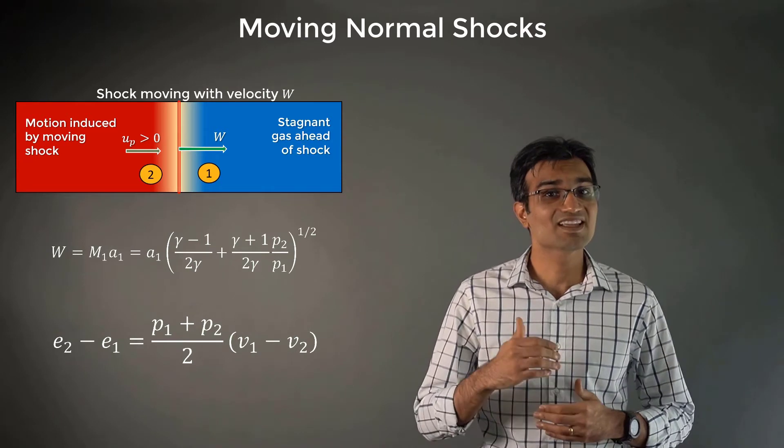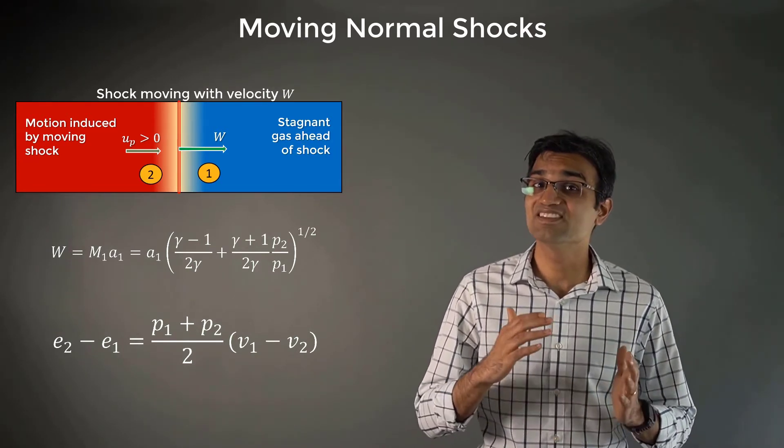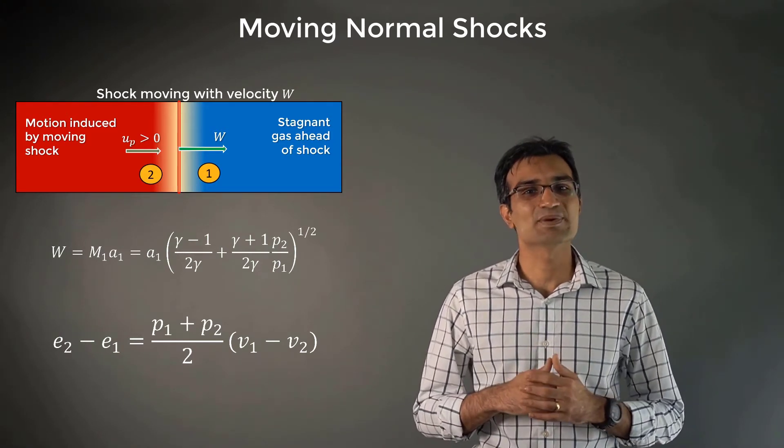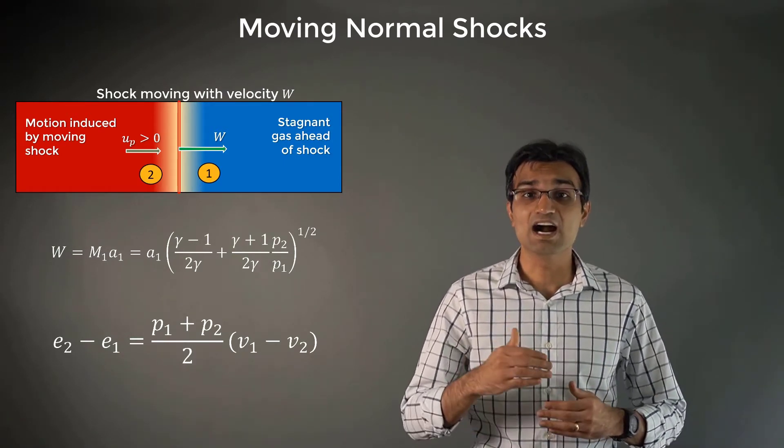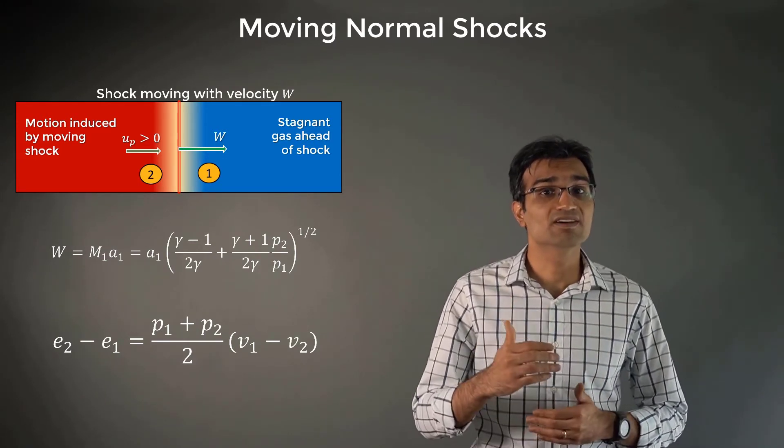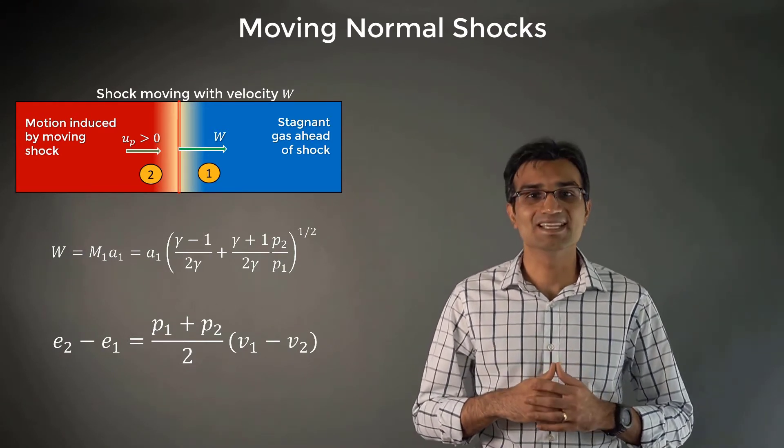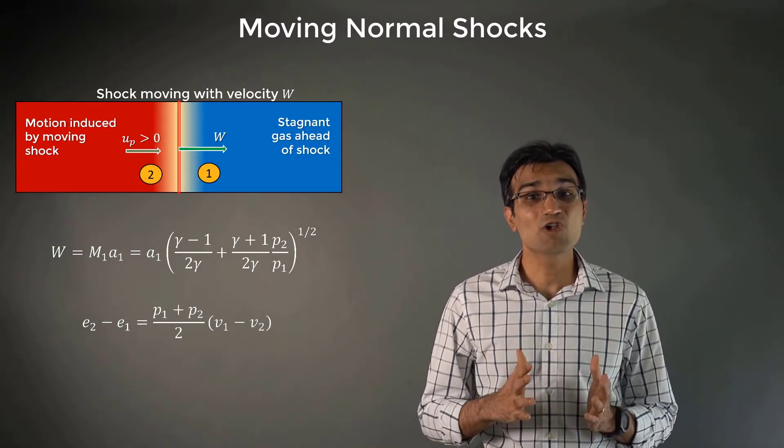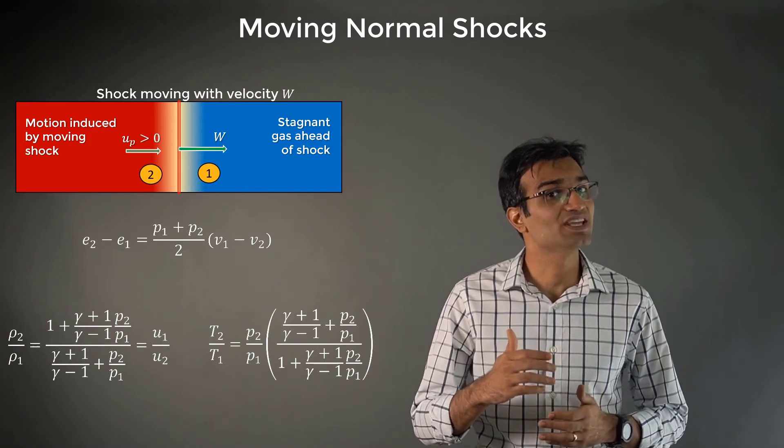By the way, did you notice that the Huguenoy equation is identical in form to the stationary shock? If you think about it, this is expected as it relates the thermodynamic variables across a normal shock, and they are independent of whether the shock is moving or stationary. Using the Huguenoy equations, we can also obtain the relations for density and temperature ratios as shown here.